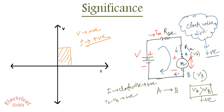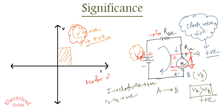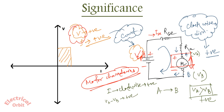Now let's not mix up this V with the supply V — let's give the name V_supply to the supply voltage. This particular V is the voltage across the motor, because we are dealing with the motor characteristics. The supply voltage V is always constant regardless of the situation of the motor. So we are not thinking about the supply voltage; we are considering the voltage across this motor drive.